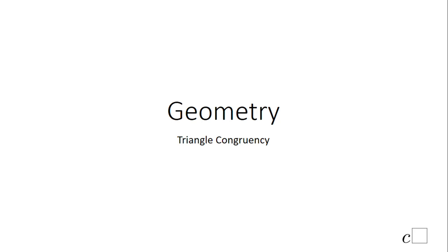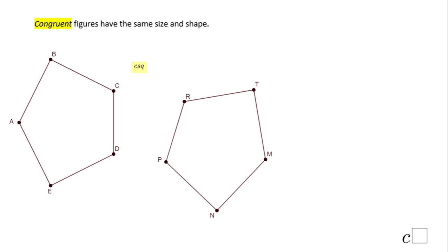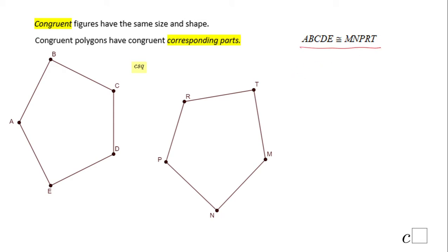Welcome back to C Squared. In this clip we're going to talk about triangle congruency. First, let's take a look at congruent figures. Here we have two polygons that have the same size and the same shape — we call them congruent. The congruency statement will tell you the corresponding congruent parts.